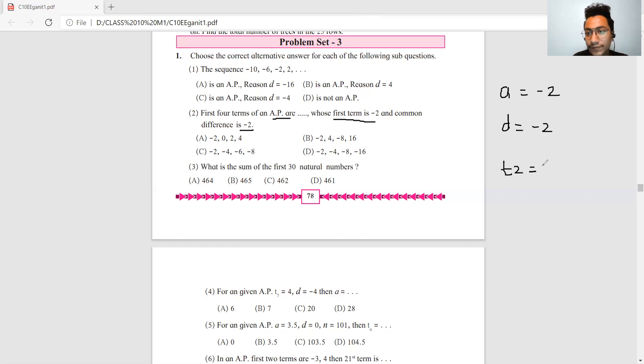So T2 will be a plus d, which is -2 plus -2 equals -4. The common difference is -2, so you'll get -2, -4. Then -4 minus 2 is -6. So your sequence is -2, -4, -6, -8. Option C. So the first answer was B, the second is C.